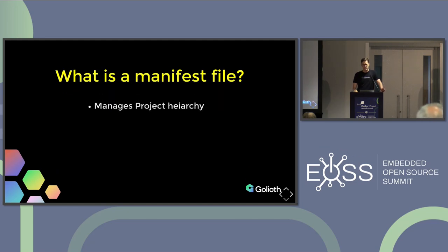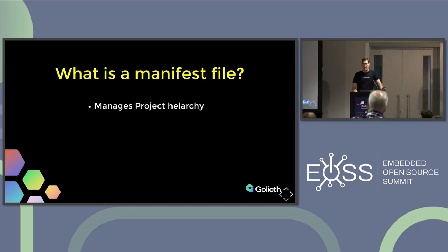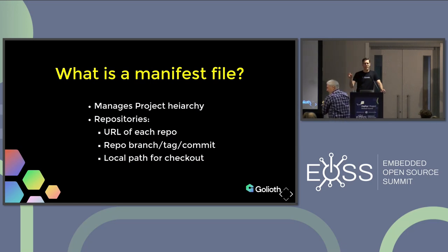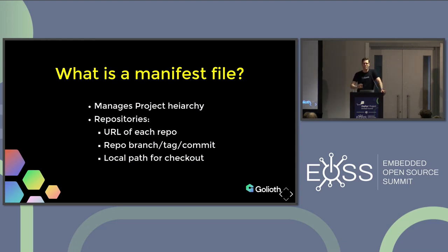It really is like a package management system. It has a hierarchy for each project. The core part of those hierarchies are repositories, and those repositories are going to have an actual location of where to check out the code. They're going to have a revision — which would be like the branch, the tag, or the hash number — and then a local path on where to check them out. These are very simple things, but if you use them in the right way, it kind of magically makes this build environment come alive. And the best part is this is a human-readable file that you commit to your own codebase.